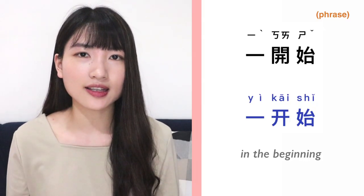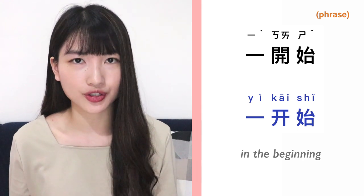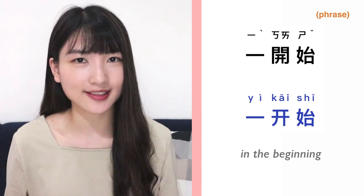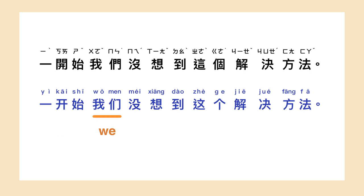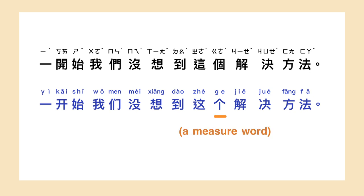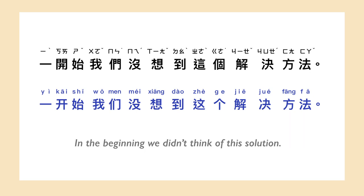When you want to talk about things that happened in the beginning, you can use this time phrase: 一开始. For instance: 一开始我们没想到这个解决方法 — In the beginning, we didn't think of this solution.